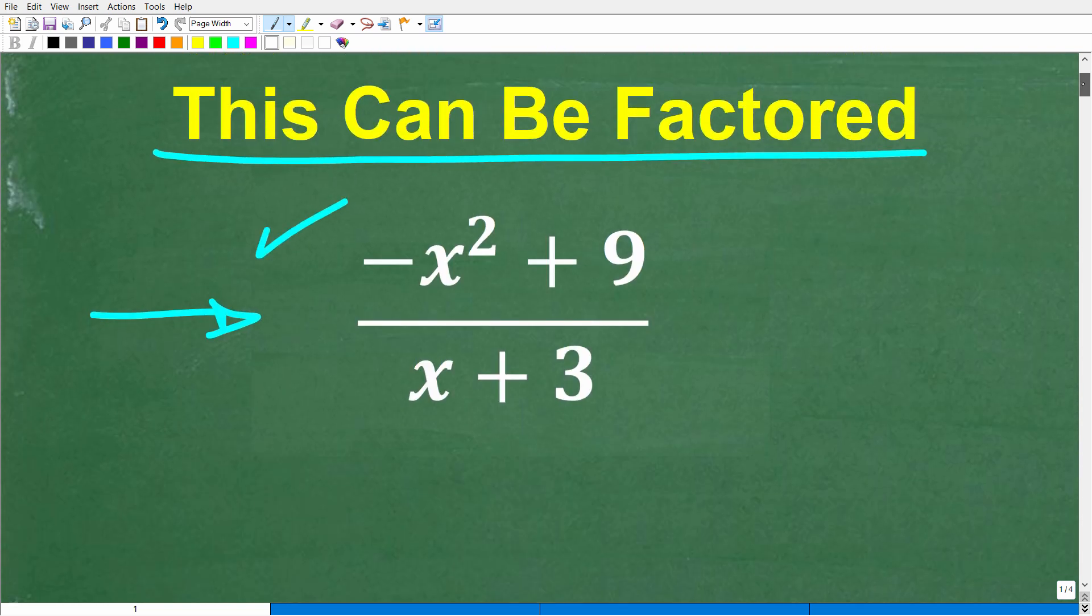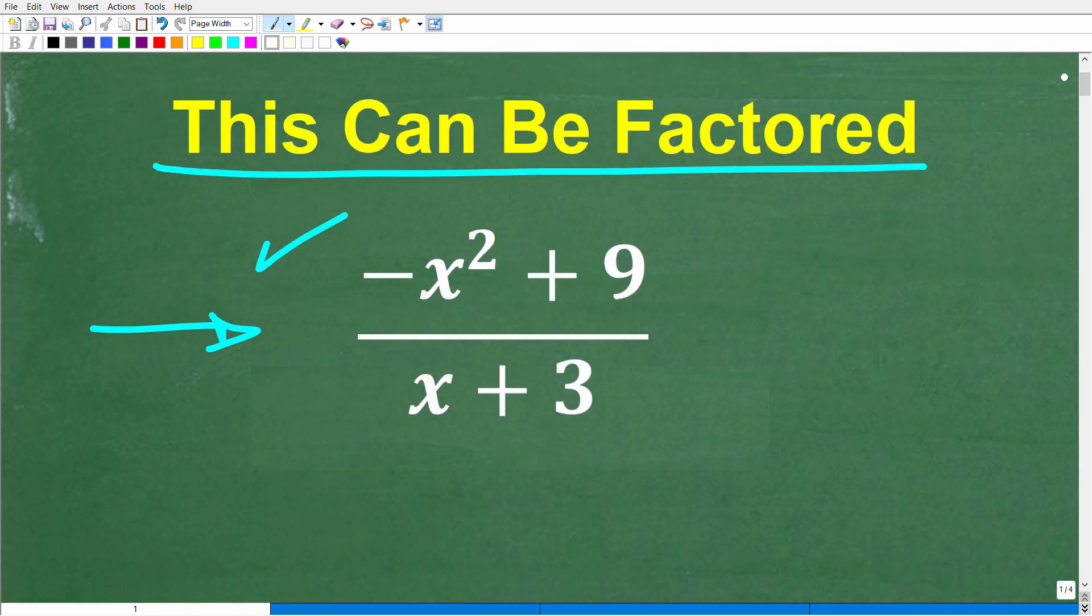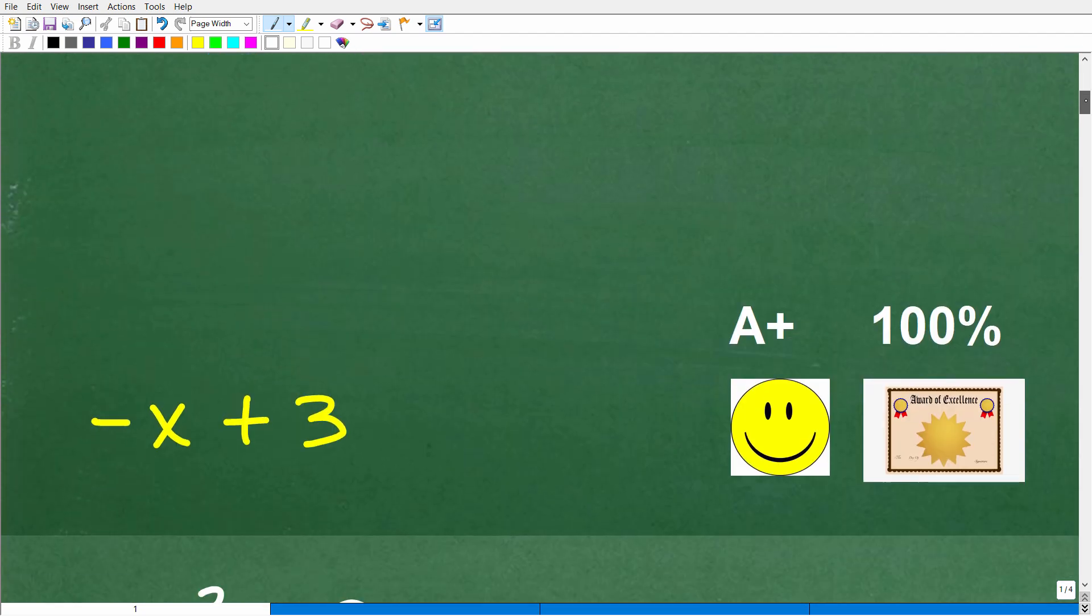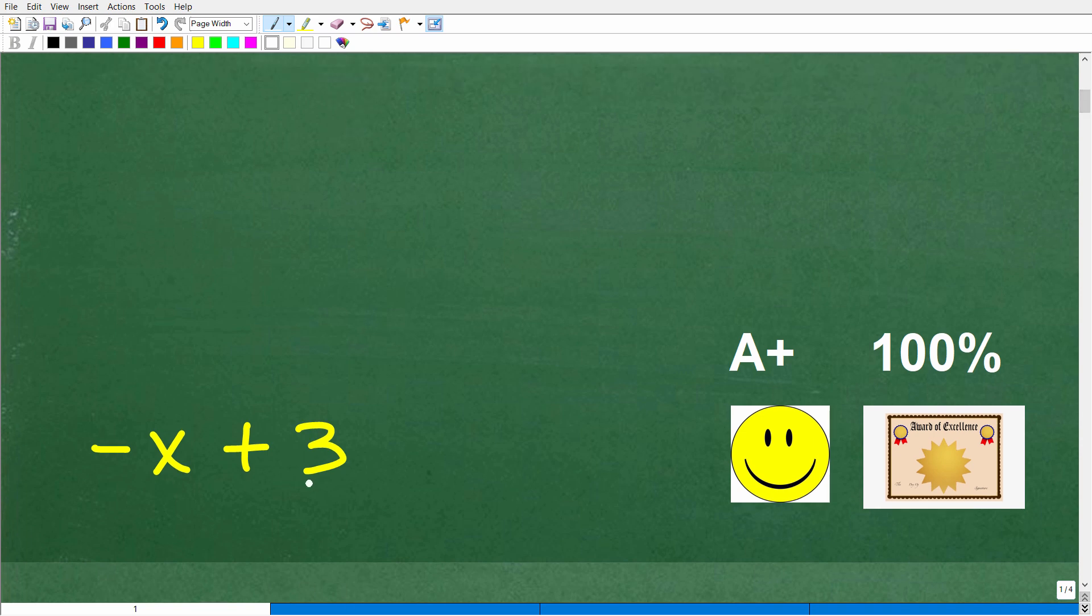Here is the problem one more time. There is no time limit here. Get a piece of paper and pencil—you don't want to try to do this in your brain. So negative x squared plus 9 over x plus 3 is equal to what? Let's go ahead and take a look at the answer.